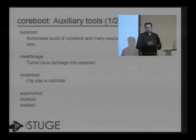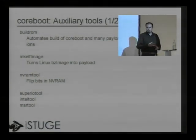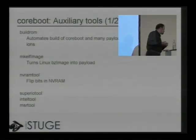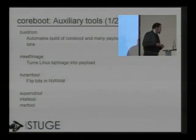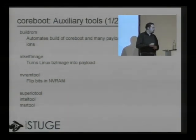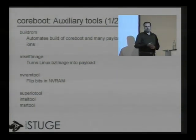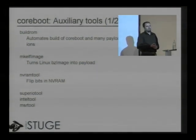SuperIO tool is great for peeking and poking at the SuperIO chip, which is the piece of hardware that implements all the old school ports like PS2 keyboard, parallel ports, serial ports, and GPIOs if you have any. Intel tool and MSR tool are more complex register dumping and tweaking tools for finding out state in a system before, after, or while working on developing Coreboot.